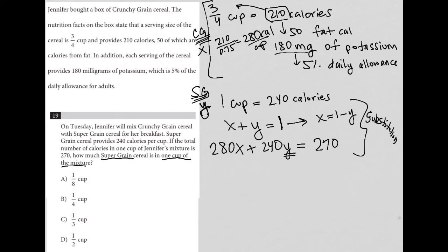Why did I do that? Well, because that allows me to go into this X here and replace it with 1 minus Y. So I'd have 280 times 1 minus Y plus 240Y equals 270. And now I have an equation that only has Y as a variable. And of course, the Y variable is exactly what I'm looking to find. So I can distribute now and simplify this equation.